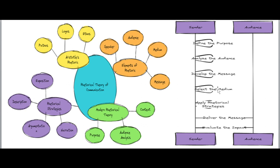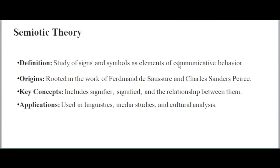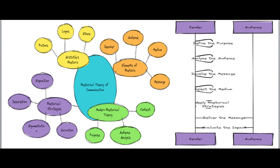The sequence diagram illustrates the step-by-step process of the rhetorical theory of communication. The sender begins by defining the purpose, identifying what they aim to achieve — such as informing, persuading, entertaining, or instructing the audience. The sender then conducts an analysis of the audience to understand their needs, expectations, values, and characteristics, which is crucial for tailoring the message to resonate with them.